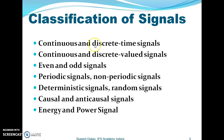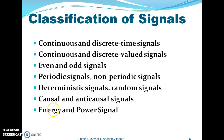These are some of the classifications of signals. Signals can be continuous or discrete, continuous and discrete valued signals, even and odd signals, periodic and non-periodic signals, deterministic and random signals, causal and anticausal signals, and energy and power signals.